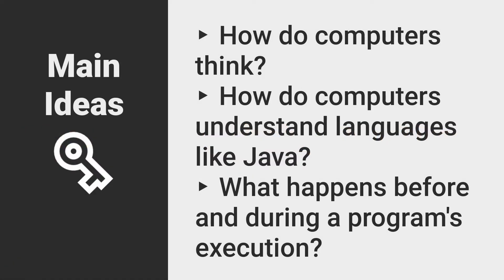Now that we understand what a program is in a general way, it is time to get more detailed about how computers are able to understand the Java programs we write. It turns out that several layers of translation occur before we can even execute or run our programs. After we talk about that, we will look at what happens when our program is actually running.